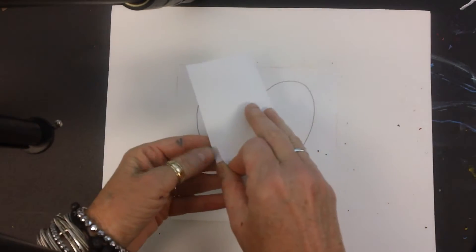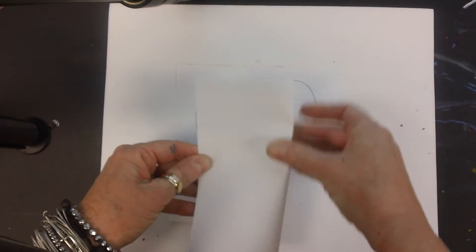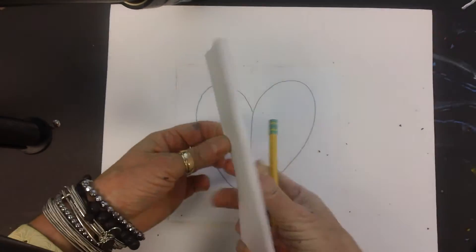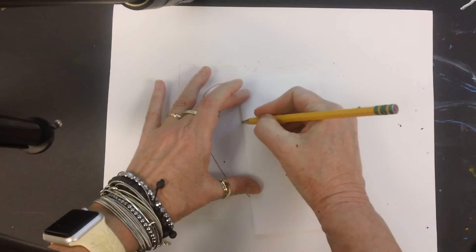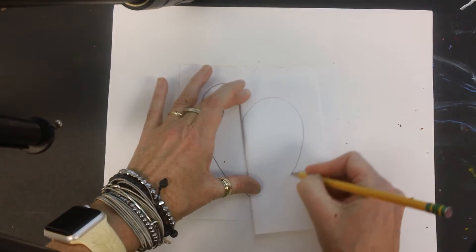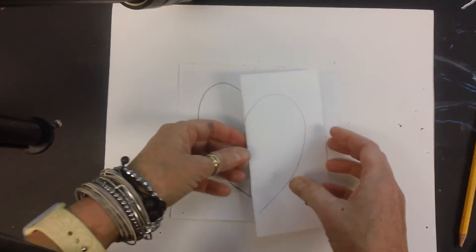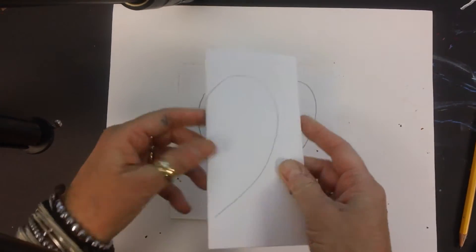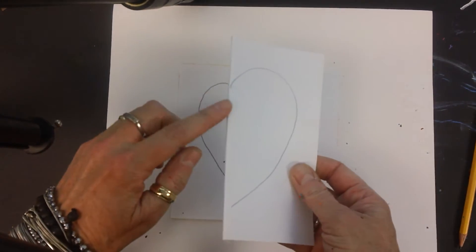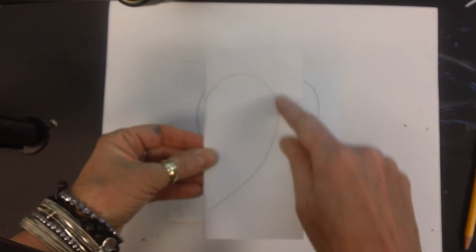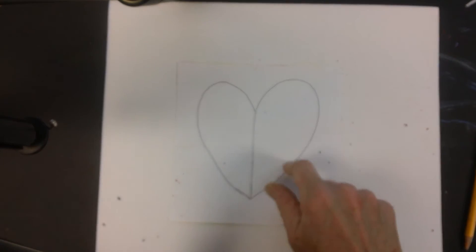Another way is to just fold it in half and draw half of a heart. The one thing here though, you have to be careful because you have to be drawing half of that heart right on the fold line, and then you would cut this out. But I'm using this way.